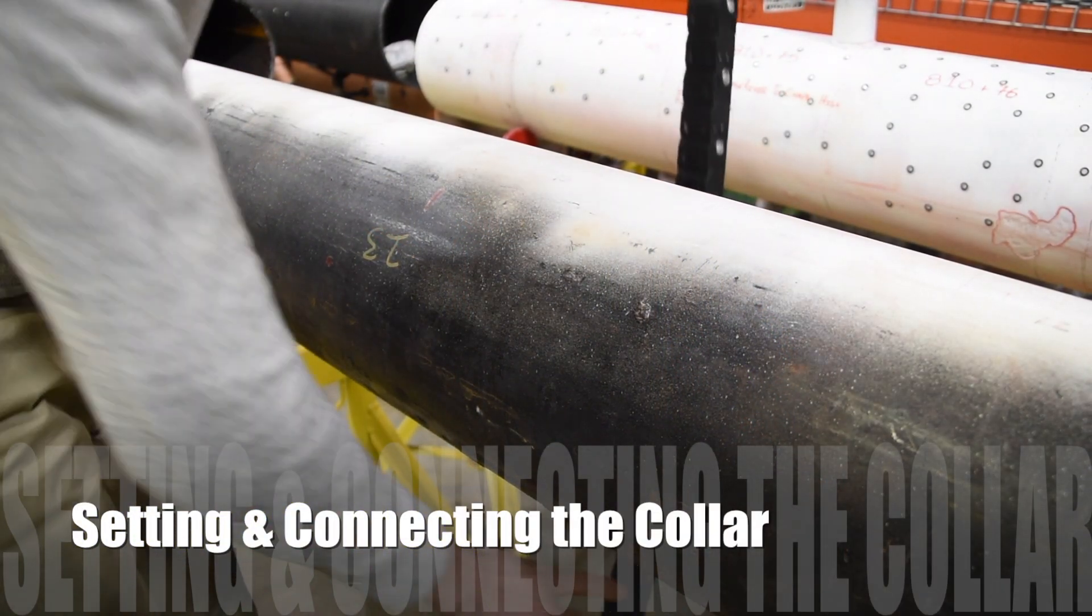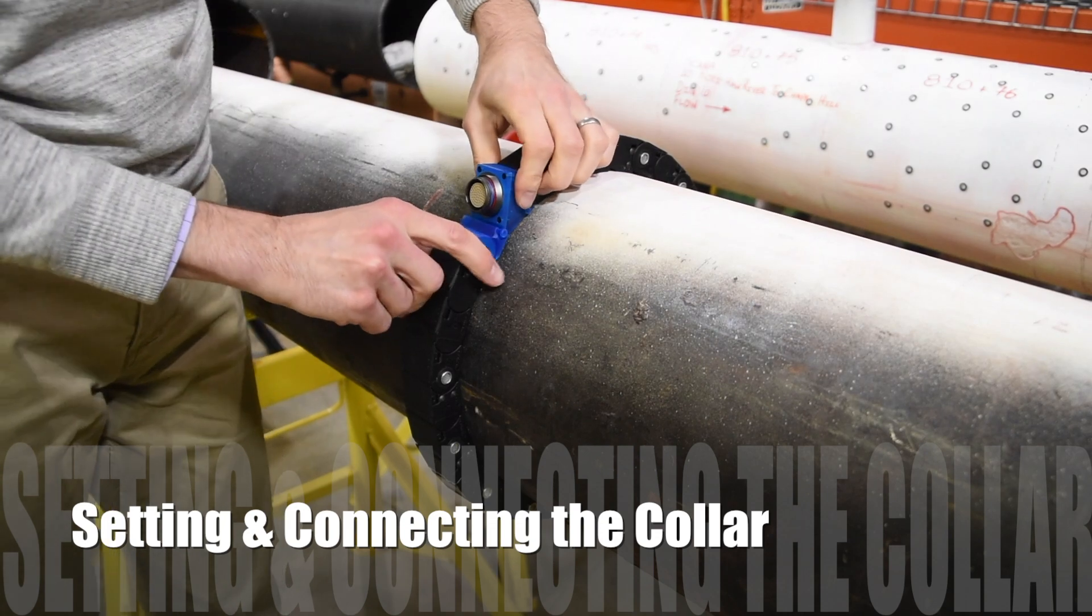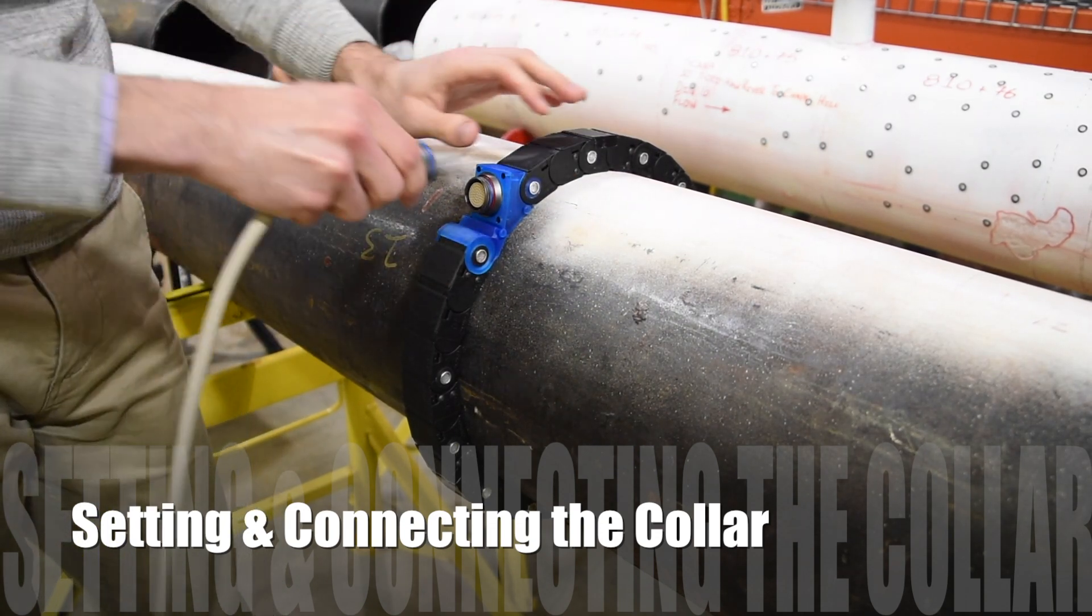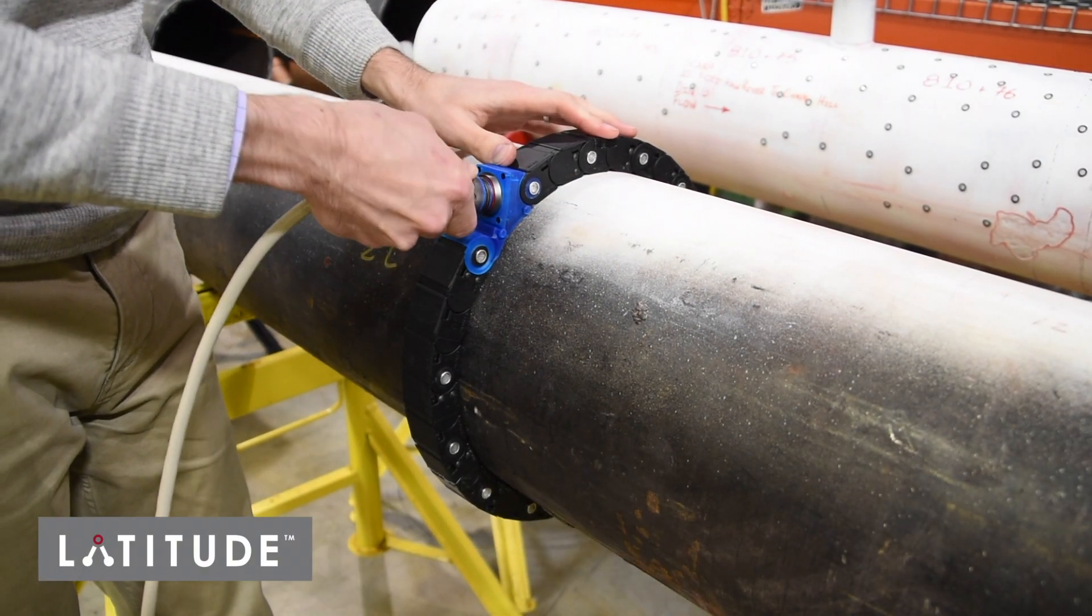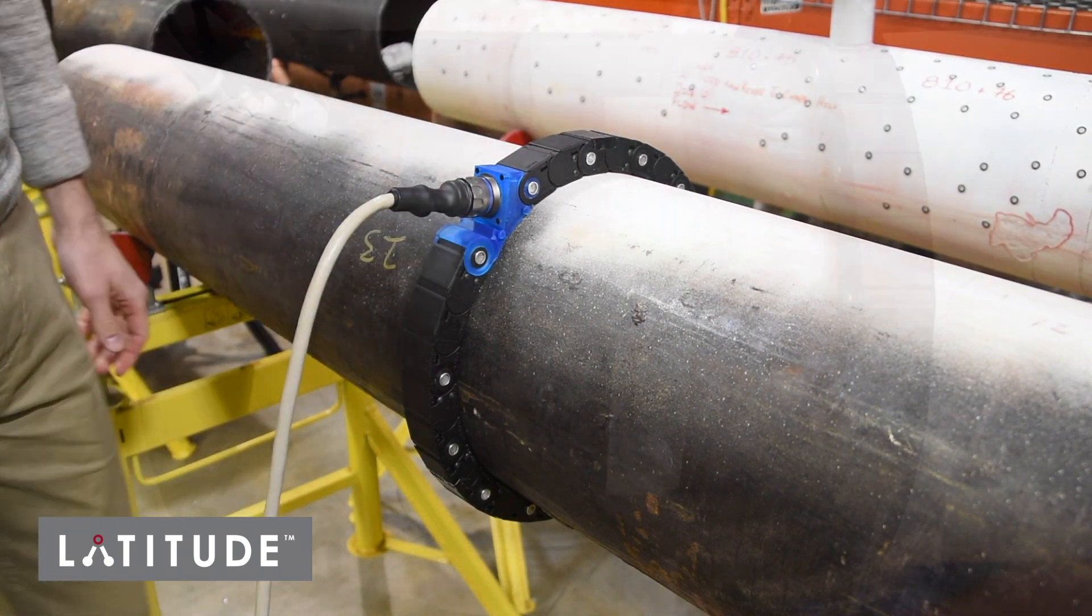Placing and connecting the LATITUDE collar is also simple. The collar is magnetic but also has a clasping mechanism for wrapping around non-magnetic pipe, and there is a single connection point to the collar.